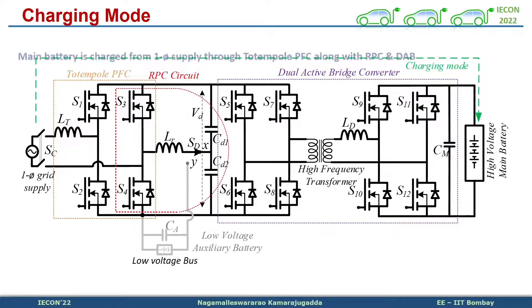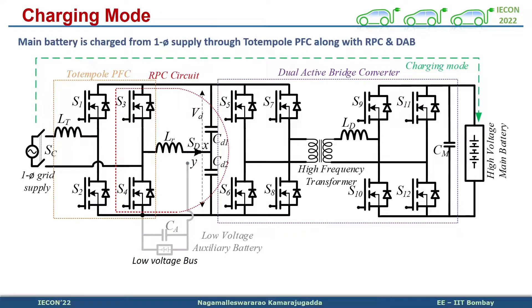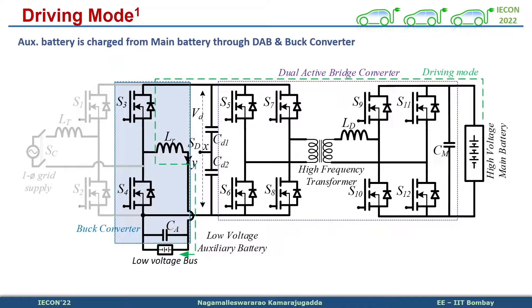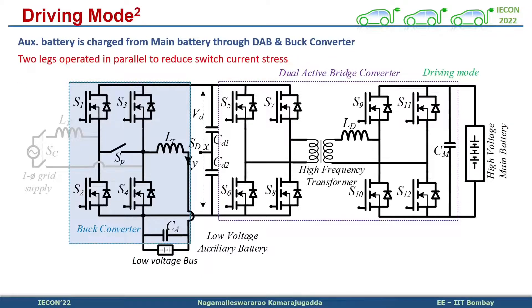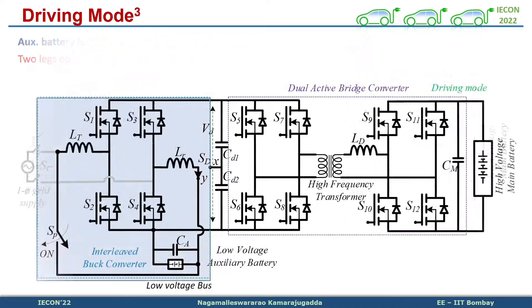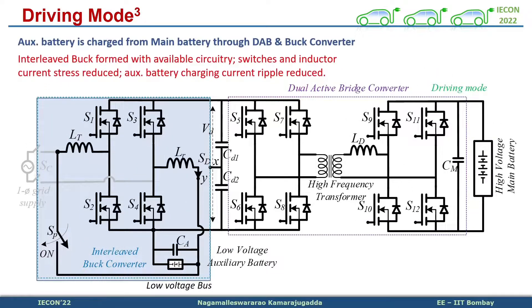In grid-connected mode, totem pole PFC, RPC, and DAB circuits work. In driving mode 1, DAB and buck converter feed the low-voltage bus. Mode 2, two legs operate in parallel, reducing the switch current stresses. Mode 3, interleaved buck converter is formed.